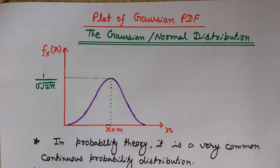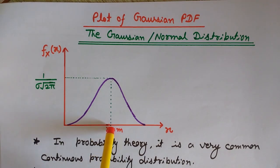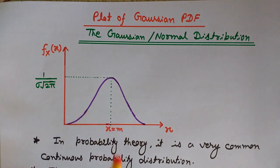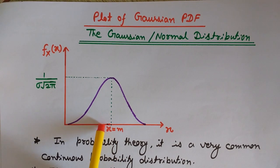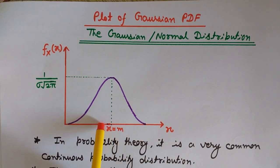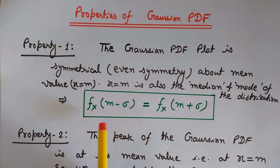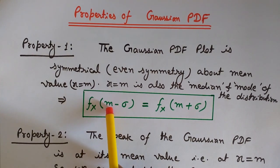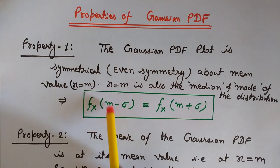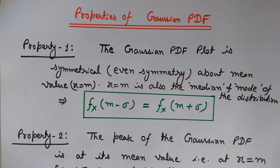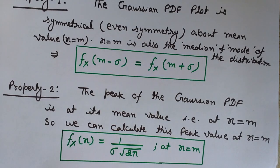Since we know by even symmetry that if you move a little bit towards the left or right from the mean value — the axis of symmetry — you will have the same values. So f(m − σ) equals f(m + σ). Moving σ to either side from the mean gives the same value of PDF on this curve, because it is symmetrical.